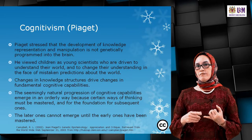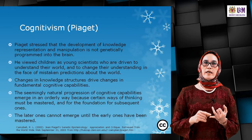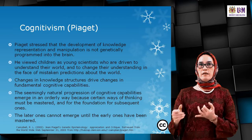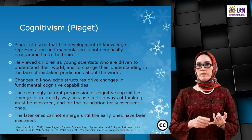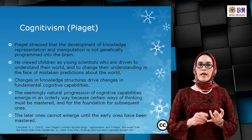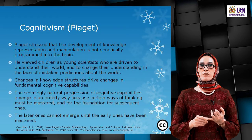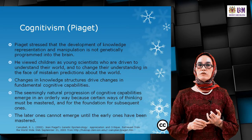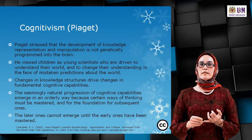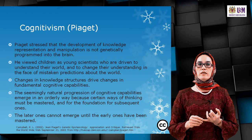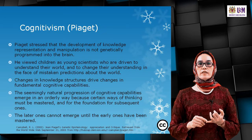The next learning theory after behaviourism — since behaviourism has nothing to do with the mind, only action, behaviour, stimulus, and response — is cognitivism, which involves the mind and the brain. Piaget stressed that the development of knowledge representation and manipulation is not genetically programmed into the brain. He viewed children as young scientists driven to understand their world, and changes in knowledge structures drive change in fundamental cognitive capabilities.